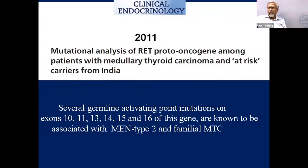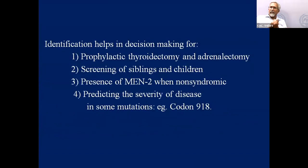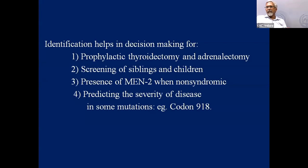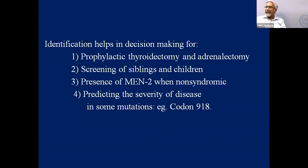We published our profile of genetic testing in Clinical Endocrinology a few years back. Our MEN2 and medullary thyroid cancer profile was similar to the Western population. This identification helps in prophylactic thyroidectomy, screening of siblings and children, presence of MEN2 when non-syndromic, and predicting the severity of disease. Certain mutations, particularly in codon 918, are known to have a more rapidly progressive disease course, helping the physician and surgeon plan treatment better.